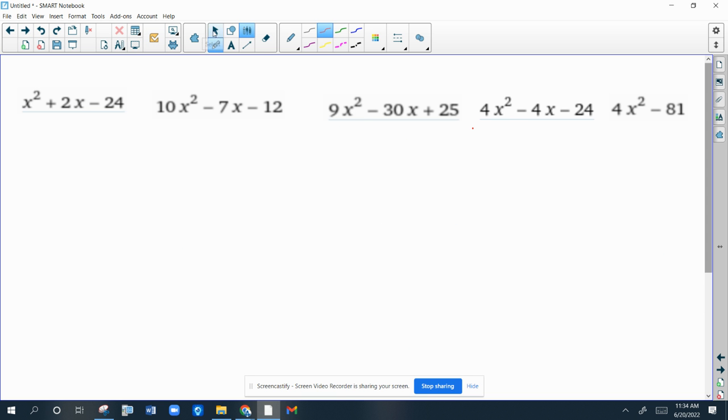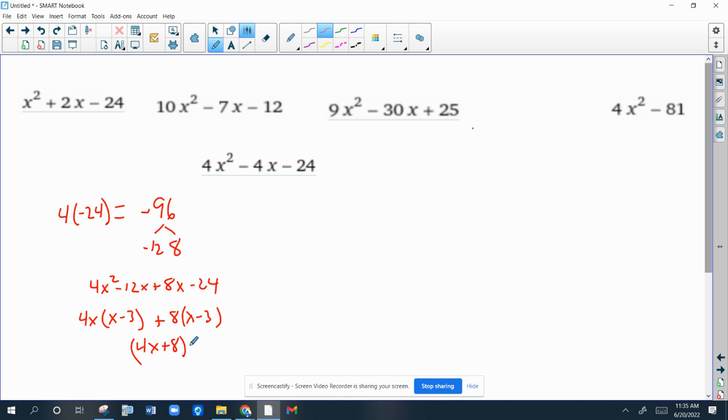The next one is this one. Now, this one you have to be very, very, very careful with. You can just go right ahead and do 4 times negative 24, which is negative 96. And factors of negative 96 that add up to negative 4 are negative 12 and 8. And then, you can try to do this. I'm going to do it like this. By grouping 4x squared minus 12x plus 8x minus 24. Factor out a common factor. 4x times x minus 3. 8 times x minus 3. And you get 4x plus 8 times x minus 3.